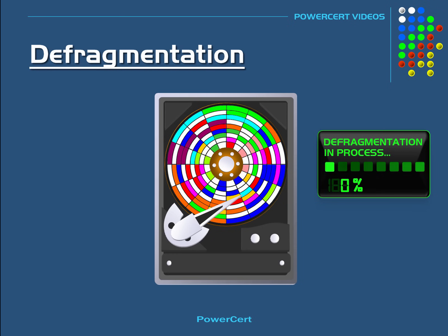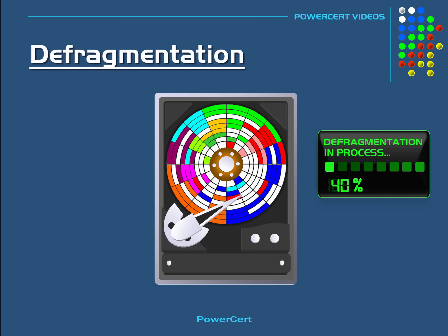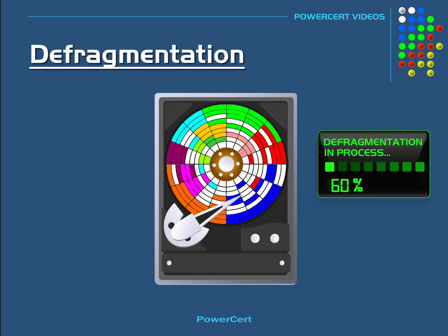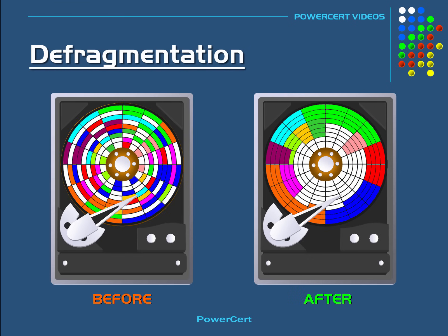Doing a defragmentation gathers all of the related files that are scattered on the hard drive and puts them together so that they are in the same physical location. And it also does its best to put the free space together in one big chunk. After the defrag is complete, the computer will run faster and more efficiently. As you can see from this before and after graphic, all the related data files are together and all the free space is put together.